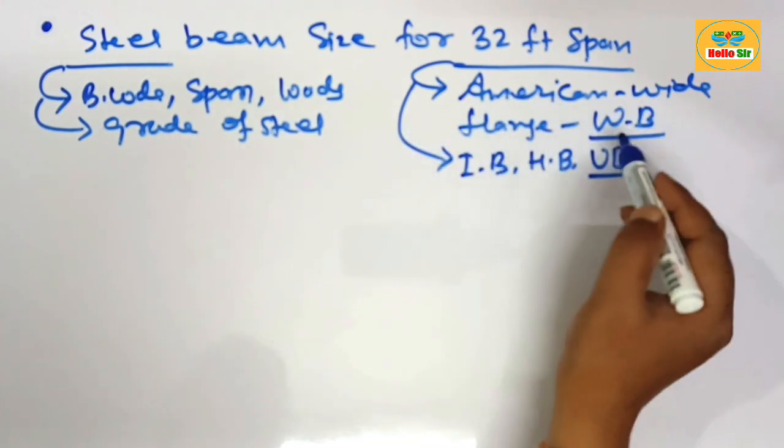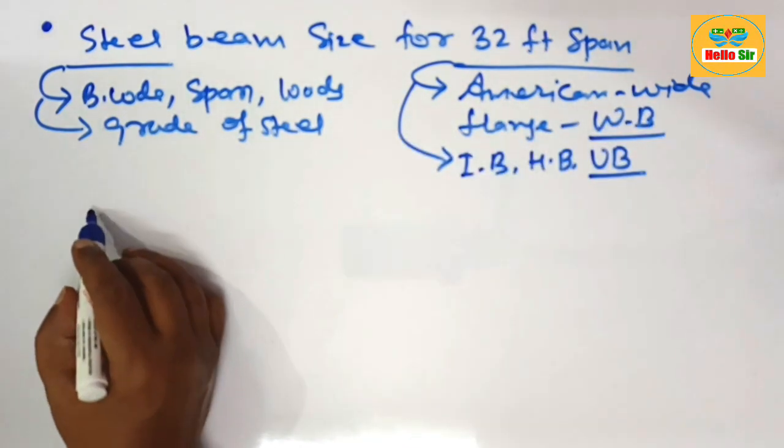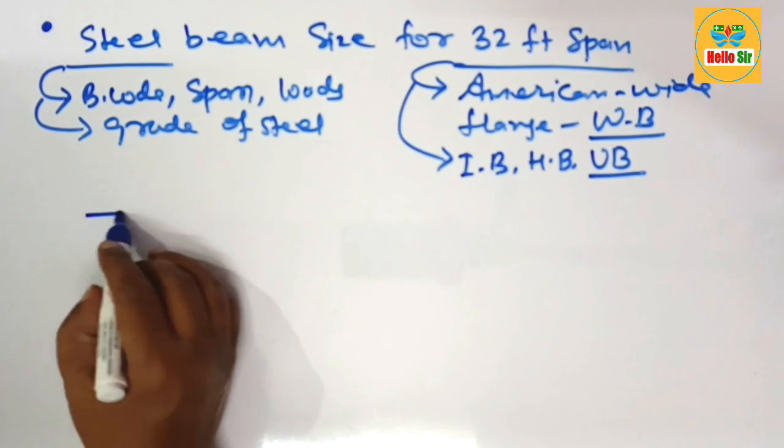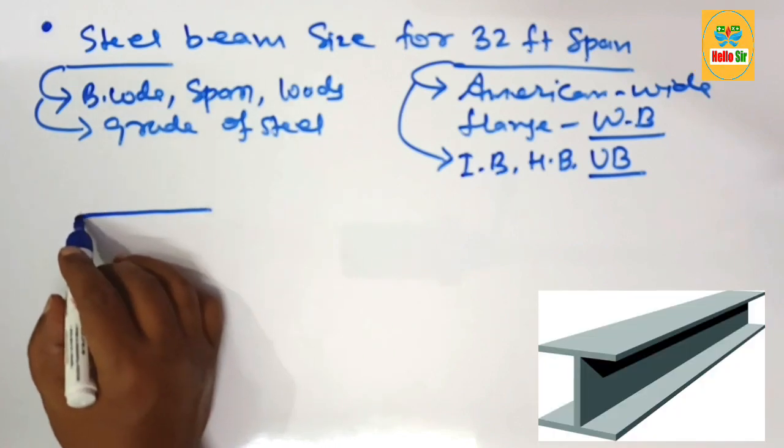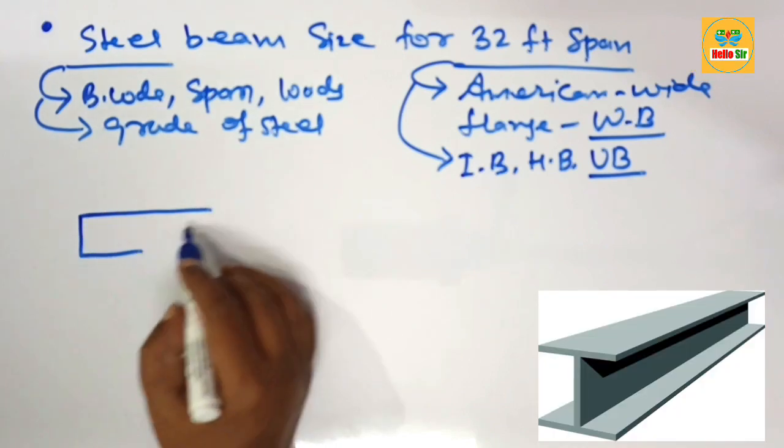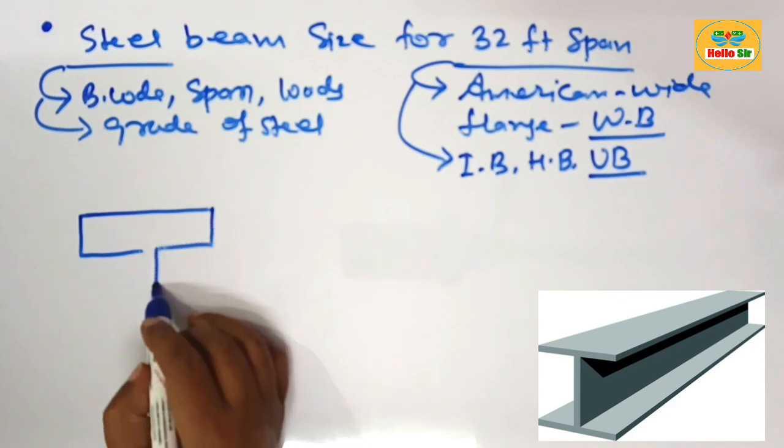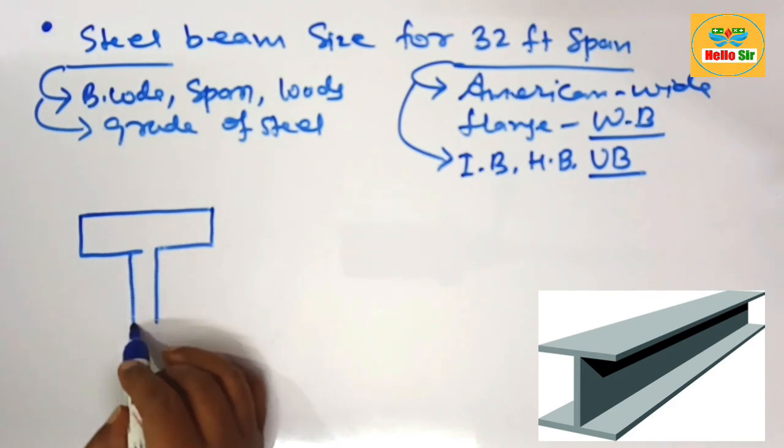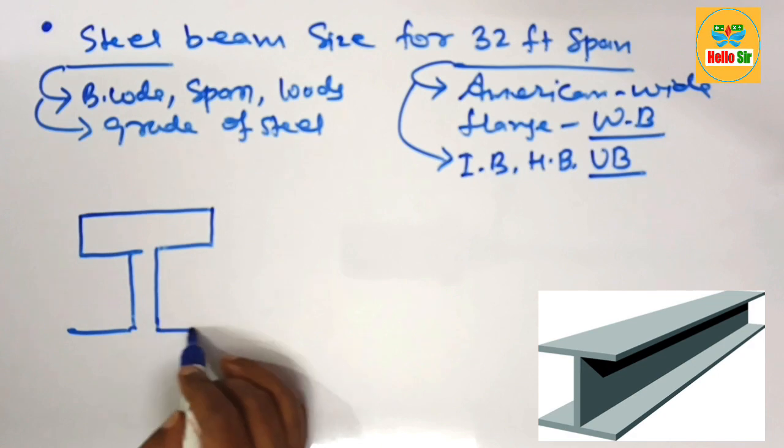Here we make a rough diagram to understand about different parts of American wide flange beam. This is rough diagram.